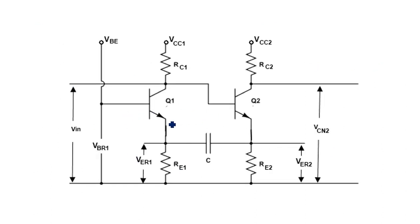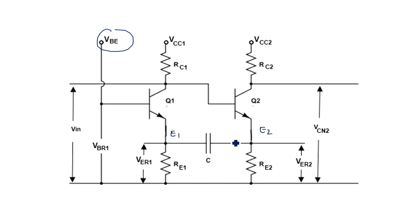Now see this circuit diagram. There are three supply voltages required: VCC1, VCC2, and VBB. You can also use a single supply by combining all three. The input of the first transistor Q1 is connected to biasing supply VBB, which is the voltage sufficient to turn transistor Q1 ON.